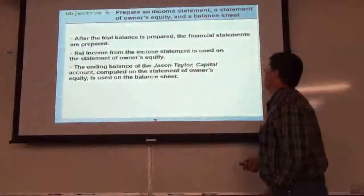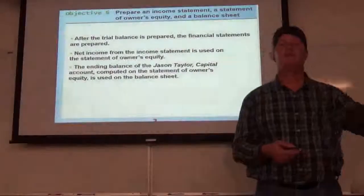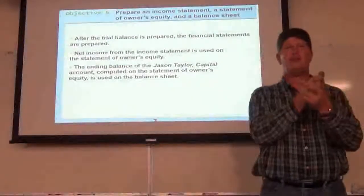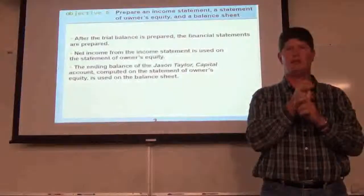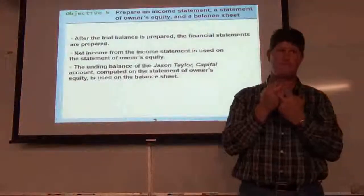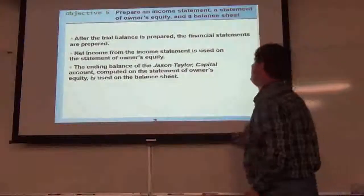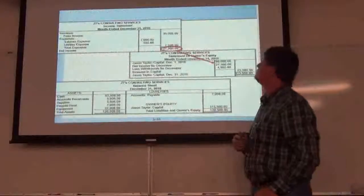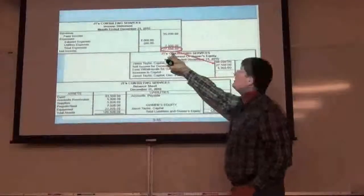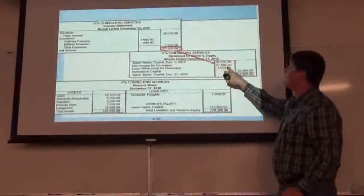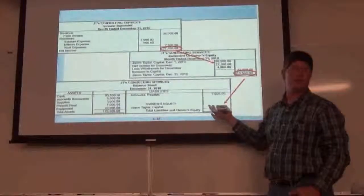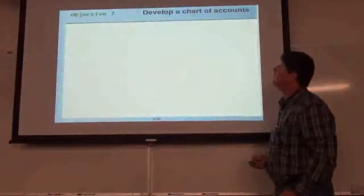The trial balance is a tool — we use it to prove we're in balance, and then we use it to help create the three financial statements: the income statement, the statement of owner's equity, and the balance sheet. The order matters: income statement first, then statement of owner's equity, then the balance sheet. You need net income from the income statement to calculate ending owner's equity, and you need ending owner's equity to make the balance sheet balance correctly.